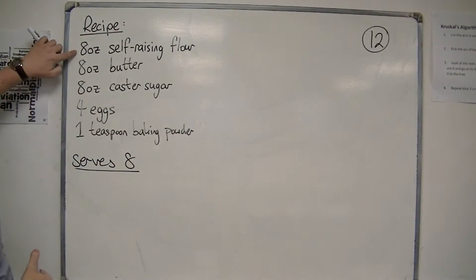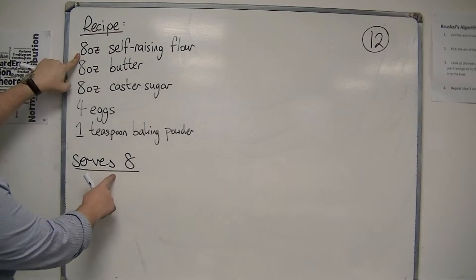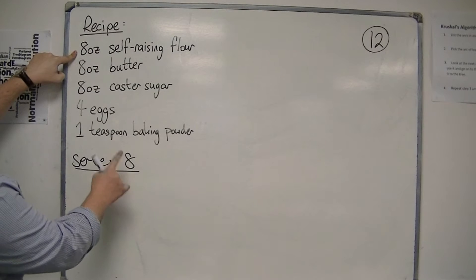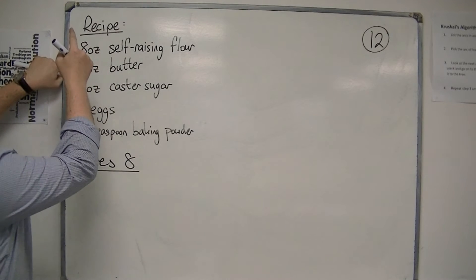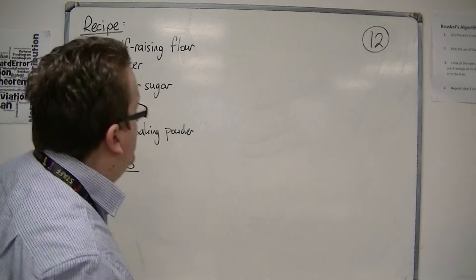If 8 ounces of flour are needed for 8 people, then 1 person needs 1 ounce. And so 12 people will need 12 ounces.